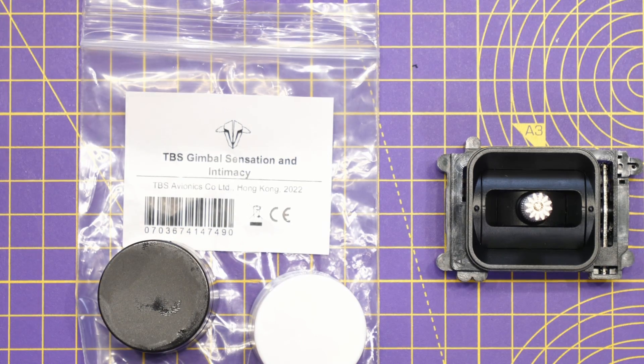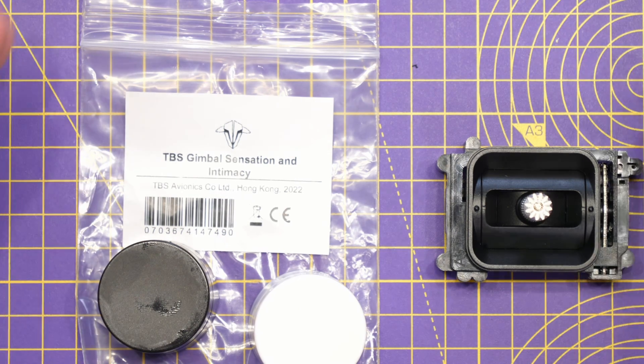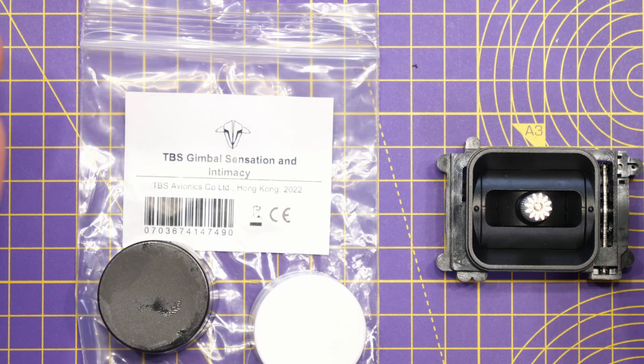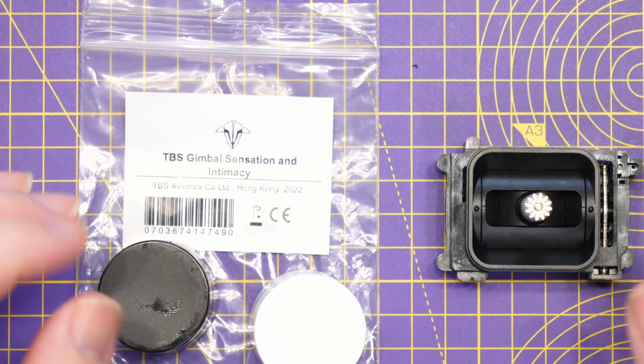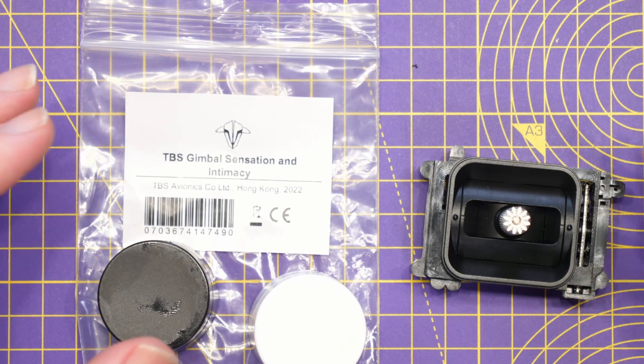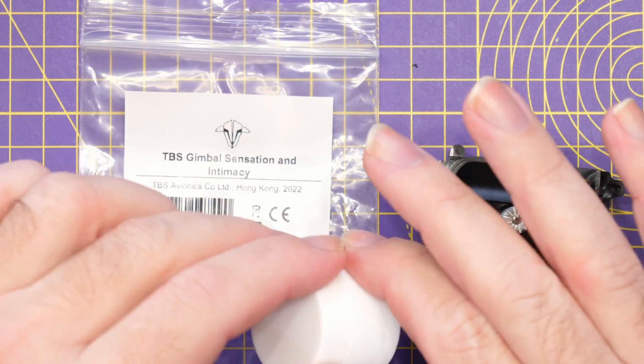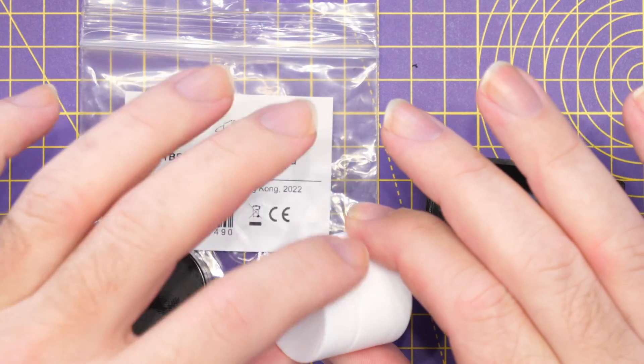Now alongside the V2 gimbals, I also ordered TBS's Gimbal Sensation and Intimacy. Now this is TBS's lubrication for getting the best possible feel from your gimbals. We have the Sensation lubricating oil in the white bottle.